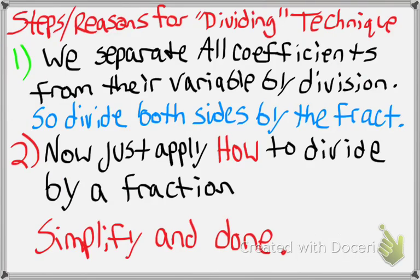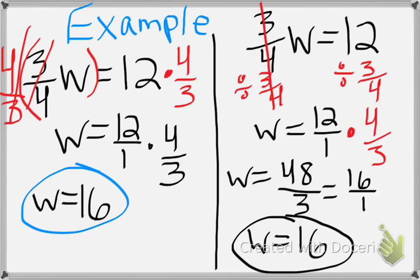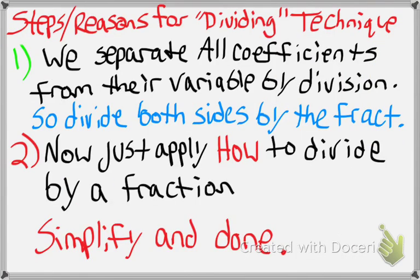If you're using the dividing technique — the original way we learned — you separate the coefficient from its variable by division. We divide both sides by that fraction coefficient. Then apply how to divide by a fraction. Divide both sides by that fraction, simplify, and you're done.